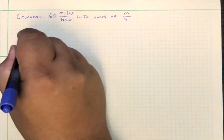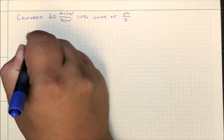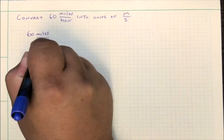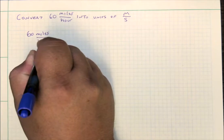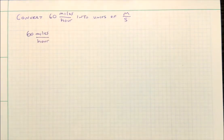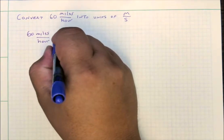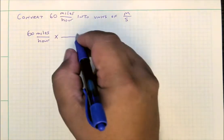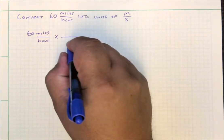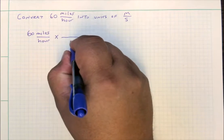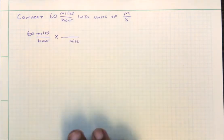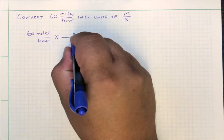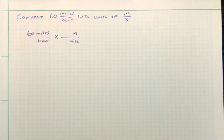The first thing we do is we write out the number that we wish to convert with the units that we wish to replace. Then we write a times symbol and a long division symbol. On the bottom of that long division symbol, we write the unit we want to get rid of, and on the top, we write the unit to convert to.